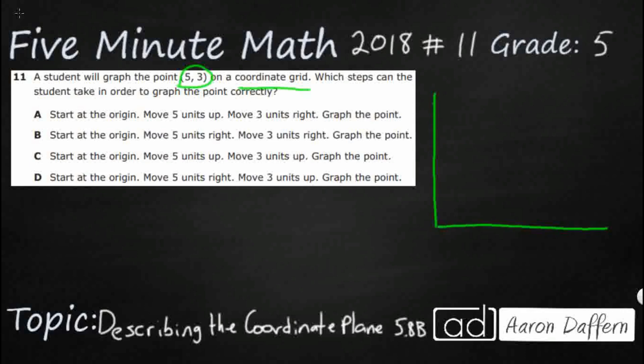We need to label this correctly. We're going to start right here where they intersect. Remember they're always making a 90 degree perpendicular angle. This is going to be zero for both axes. The axis that goes across from side to side is our x-axis, labeled with an x at the end by the arrow.